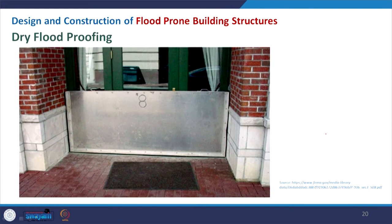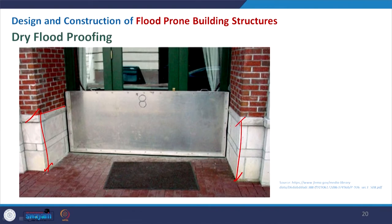Here is another picture where this is protected with removable panels at the entry. The plinth is already made of stone, which will not allow water to penetrate. We must remember that masonry or brick work will be porous and may also get affected, but a plinth of stone or RCC will be better. Wherever there is an entrance and you cannot have the plinth, you can go with a flood panel. This is the way we can do dry flood proofing.